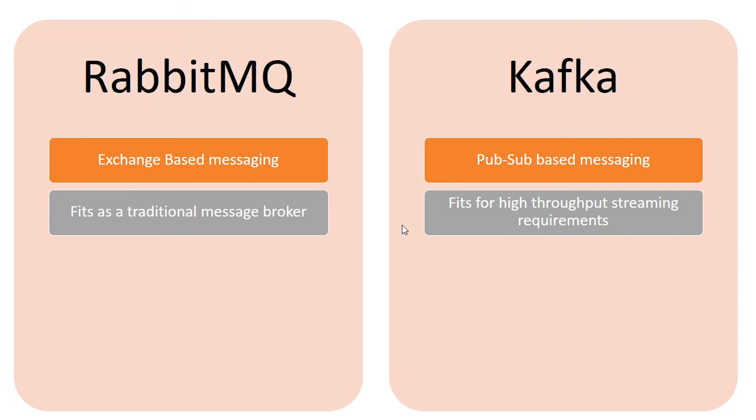In case of a conventional messaging option where you just want middleware that acts as a smart broker, you will go for RabbitMQ, because it fulfills all the requirements of passing messages as middleware very conveniently and efficiently.